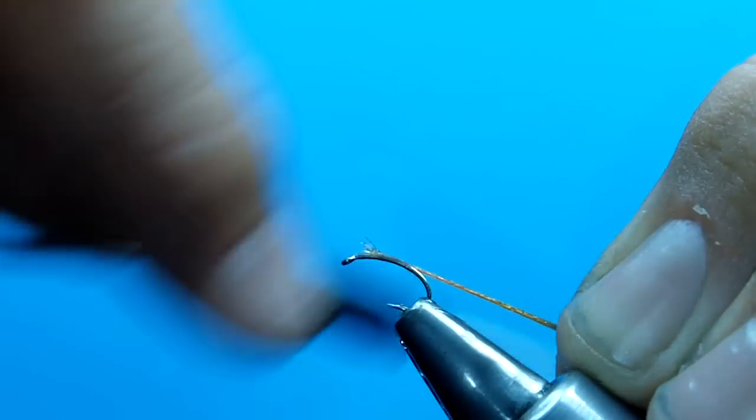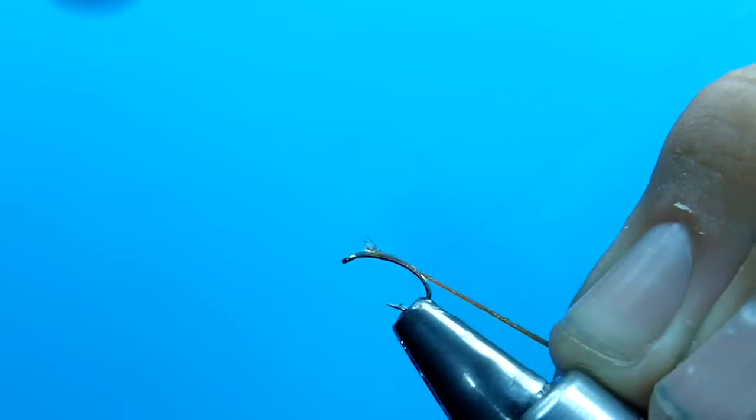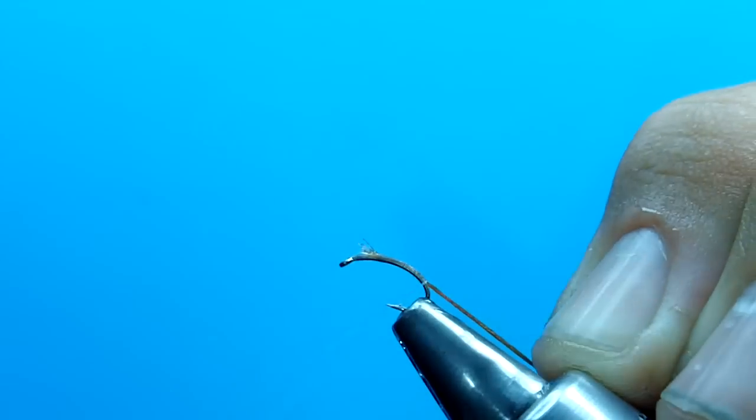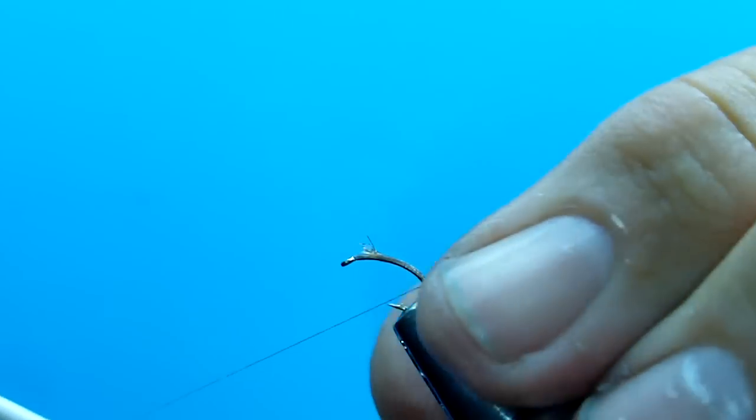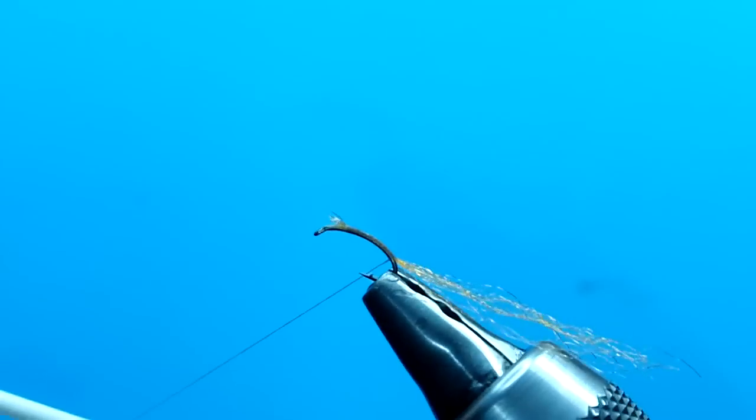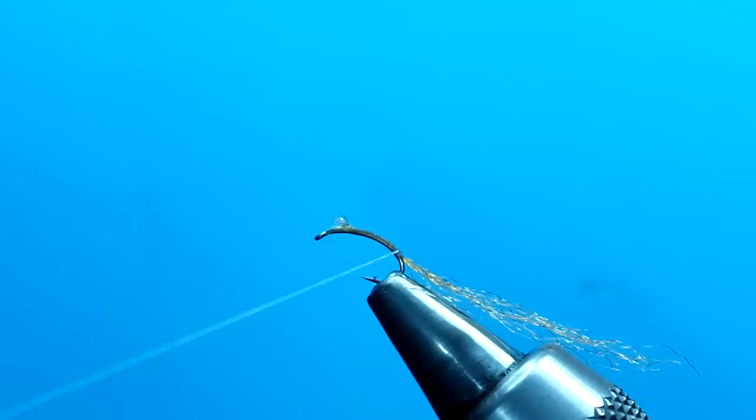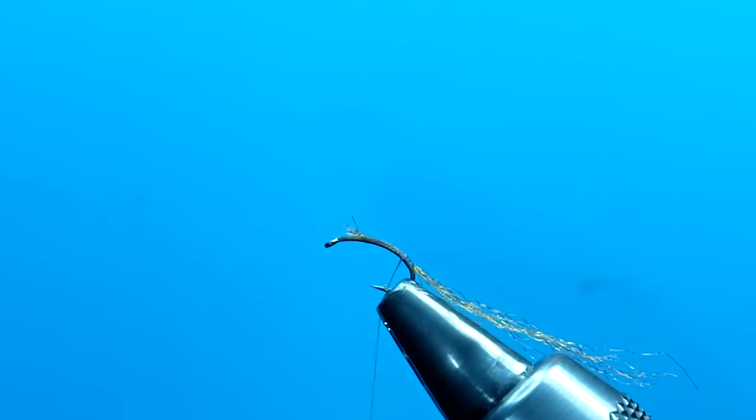So we're going to bind this down. We're going to go down about halfway down the bin, just past the barb of the hook. This is on a standard curved shank scud hook. Alright, I'm going to come back up just a little bit.